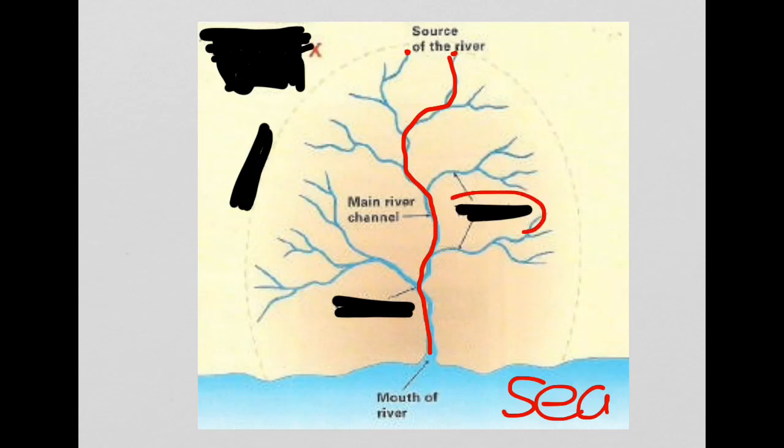These two labels represent small rivers that join the main river channel. And of course, these are tributaries. The exact point where a tributary joins a main river channel is called the confluence.